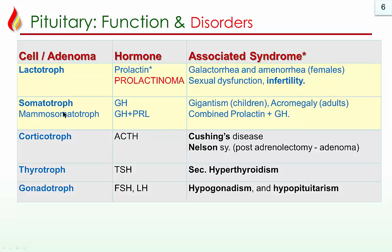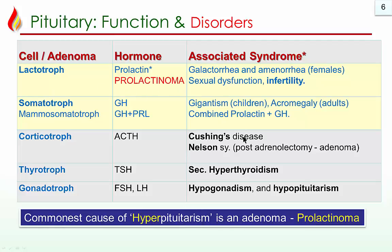The second most common is the somatotroph adenoma — the growth hormone-producing cell — which produces either gigantism in children or acromegaly in adults. The third common type is the mammosomatotroph, which produces both growth hormone and prolactin, so features can be combined. The commonest cause of hyperpituitarism is an adenoma, and among adenomas, the commonest is prolactinoma.